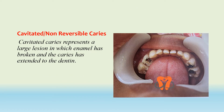Cavitated or non-reversible caries represents a large region in which the enamel has been broken and caries has extended into the dentine. You can clearly see the large cavitated region where enamel is broken and caries has proceeded into the dentine.